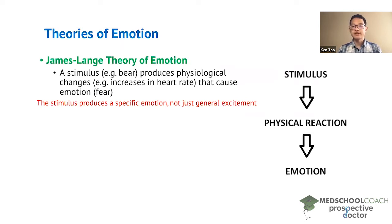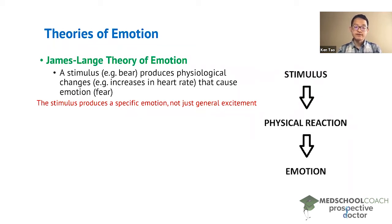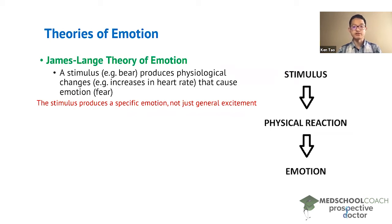General excitement is what you see in very young infants. Very young infants are not able to express different specific emotions like happiness, sadness, or anger — instead they just show signs of general excitement. As they grow up they are able to produce different facial expressions and gestures that you can then distinguish as different specific emotions. But the James-Lange theory is looking specifically at specific emotions, not just general excitement.